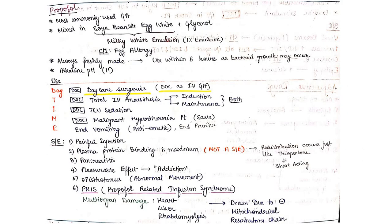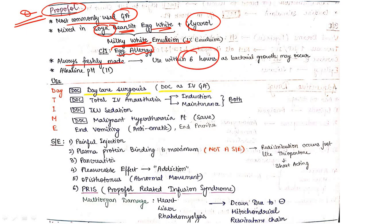Propofol is the most important and commonly used GA. Prepared by mixing with soybean oil or egg white plus glycerol - appears as milky white emulsion. Contraindicated if there is egg allergy. Should always be freshly made and used within six hours as bacterial overgrowth may occur. Has alkaline pH.